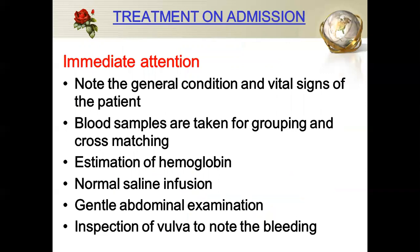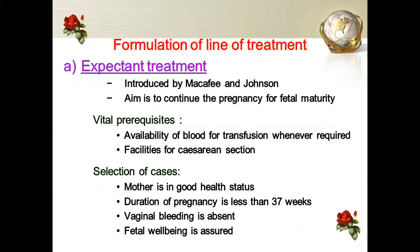On admission, check the general condition and vital signs. A blood sample should be taken for grouping and cross-matching for possible transfusion, and hemoglobin level estimated. Normal saline infusion should be started. Perform gentle abdominal examination but no vaginal examination. Inspect the vulva to note the amount of bleeding.